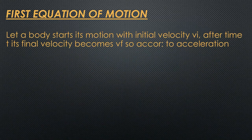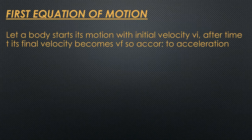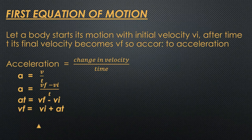For the first equation of motion, we suppose: let a body start its motion with initial velocity v_i. After some time t, its final velocity becomes v_f. As I mentioned, the acceleration being produced in the body at this time is uniform acceleration, which I have previously defined. Therefore, we have the formula for acceleration.